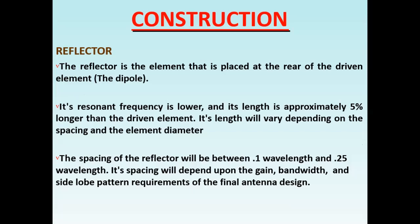Its length will vary depending on the spacing and the element diameter. The spacing of the reflector may be between 0.1 wavelength and 0.25 wavelength. Its spacing will depend upon the gain, bandwidth, and the side lobe pattern requirements of the final antenna design.